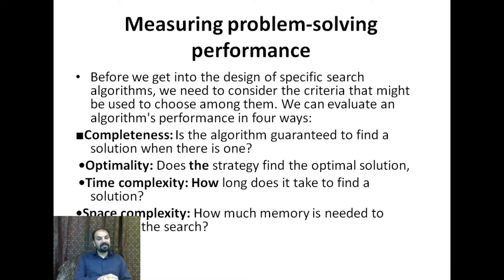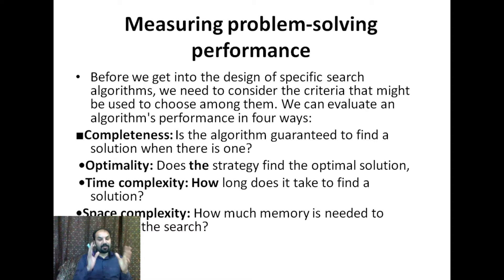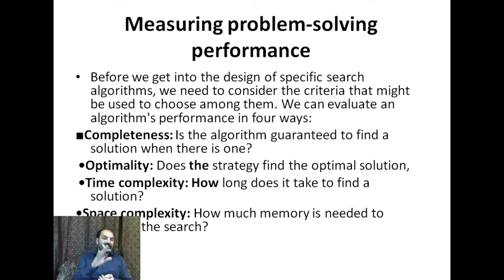Optimality is the second criteria — it means the strategy will find the best, optimal solution. Time complexity refers to how long it does take to find a solution. Space complexity is also considered when evaluating search algorithm performance.